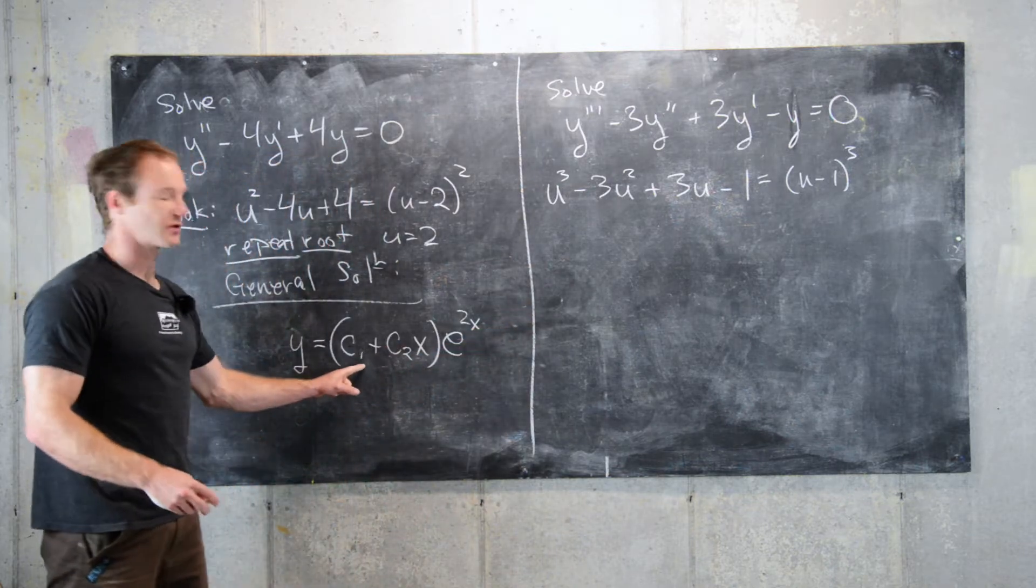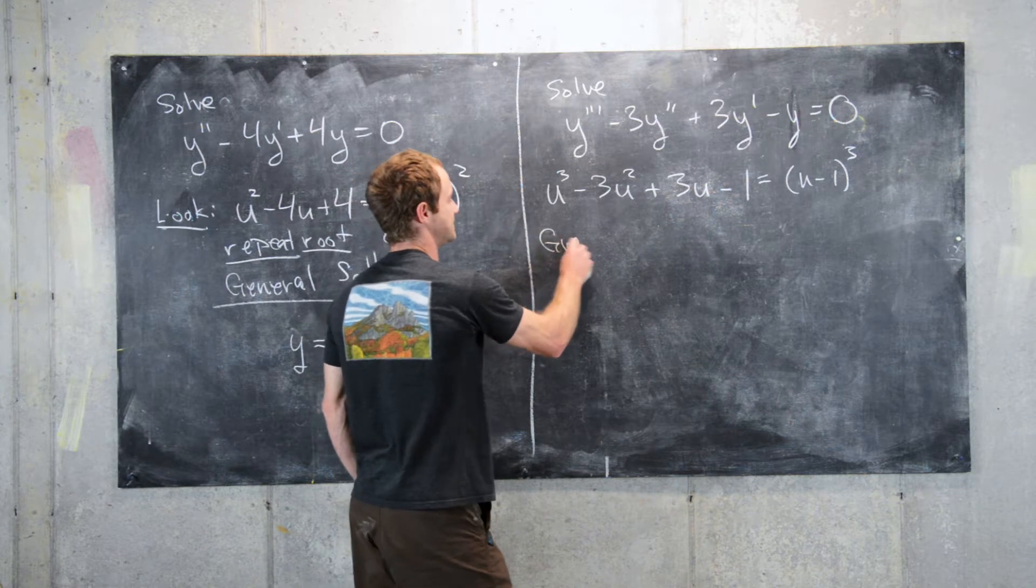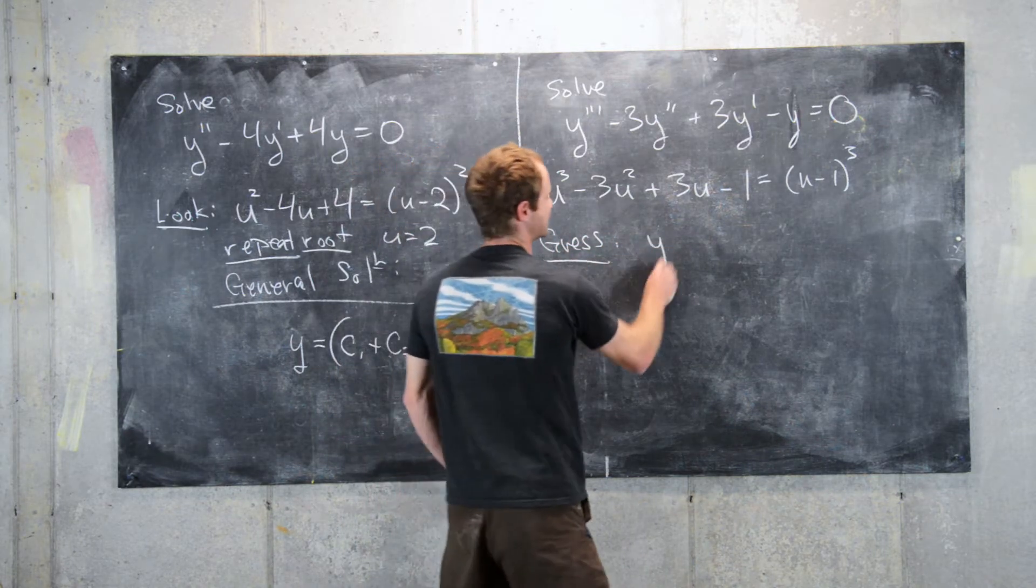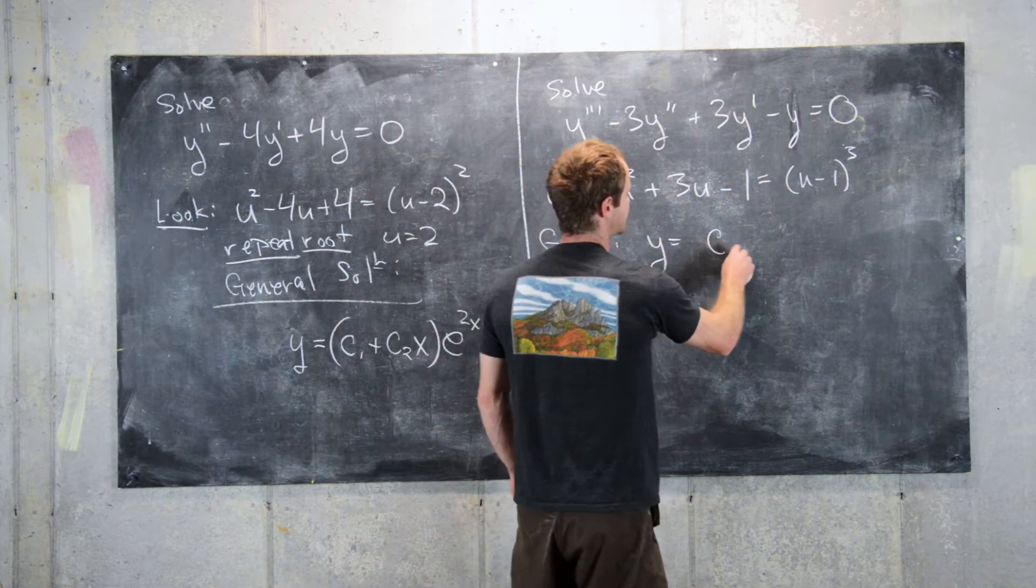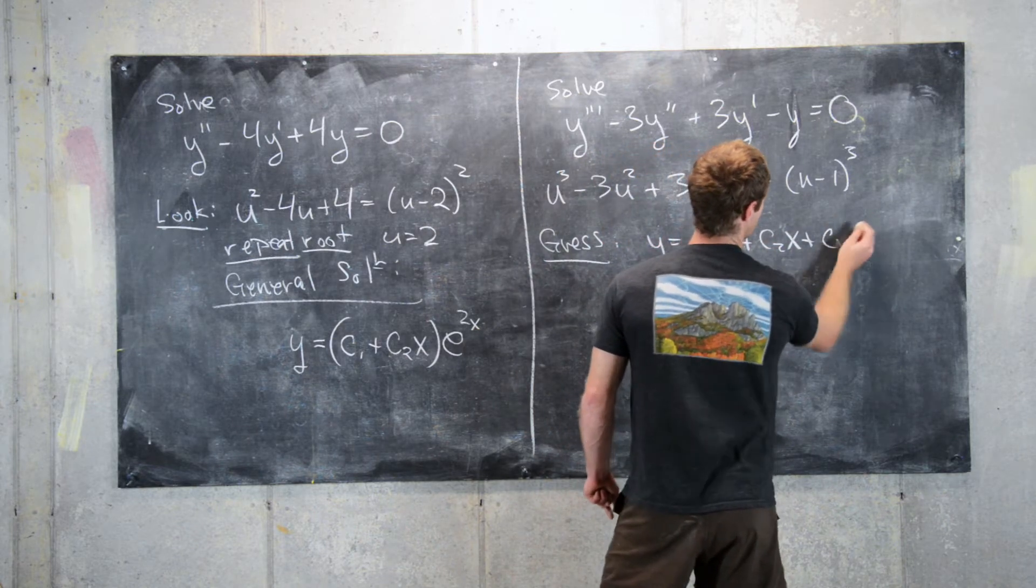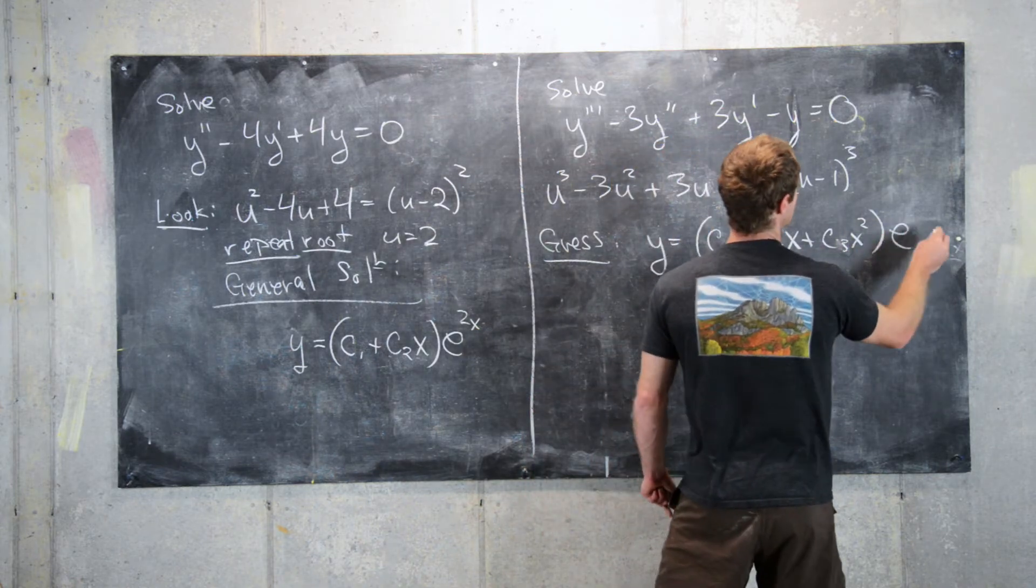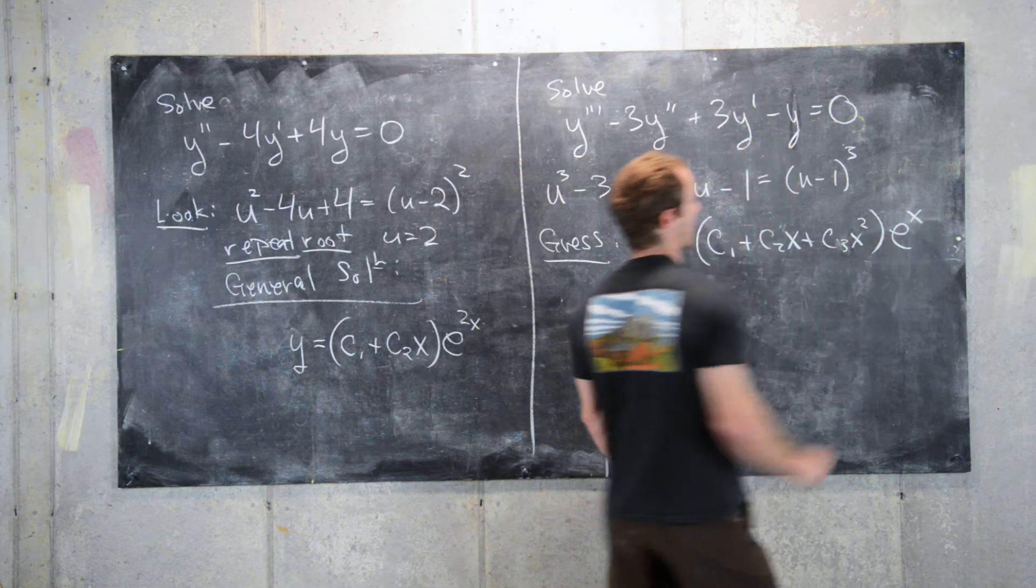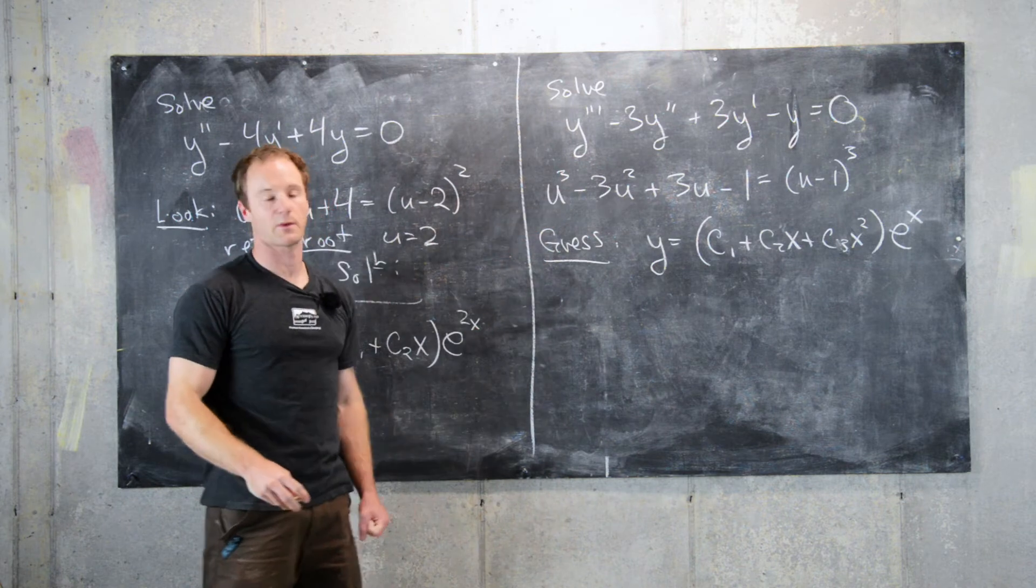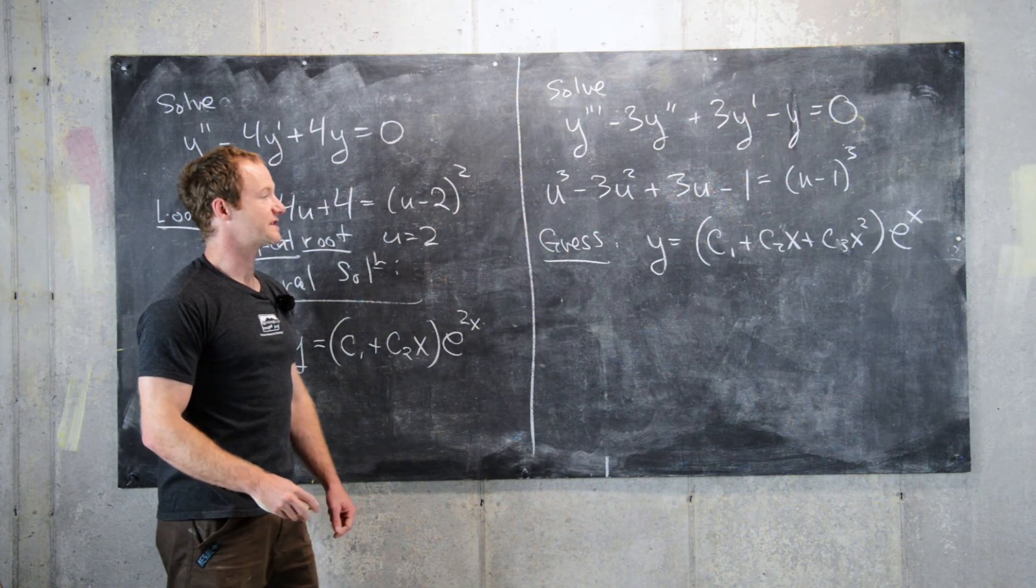And, taking inspiration from what we had here, we could maybe guess that the solution is given by c1 plus c2x plus c3x squared times e to the x, because here we have a repeated root of 1. And you can check this guess, and you'll see that.